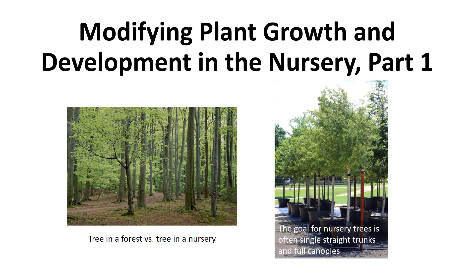A tree that develops in a dense stand within a forest will have a narrow crown and a tall, lean stem due to crowding and limited light within the stand. A tree that develops in an open area will have a broader, fuller crown with a stem of greater caliper and taper.